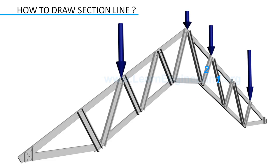Let's see a few examples for drawing section lines. For this case, if you want to determine force in member one, we can draw the section line like this. This line is passing through only three members, so this line is good.